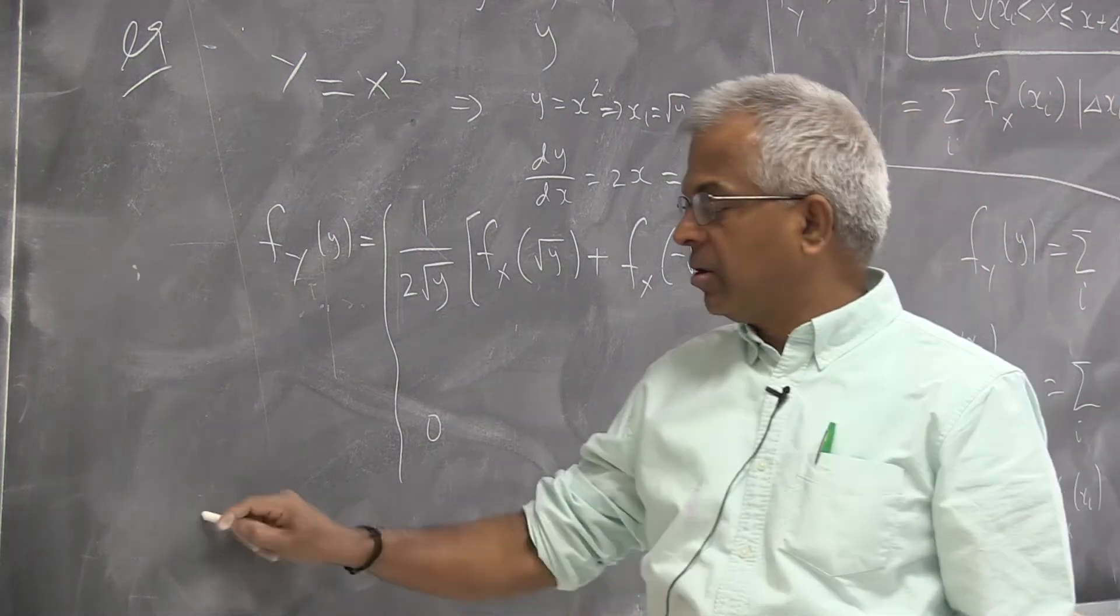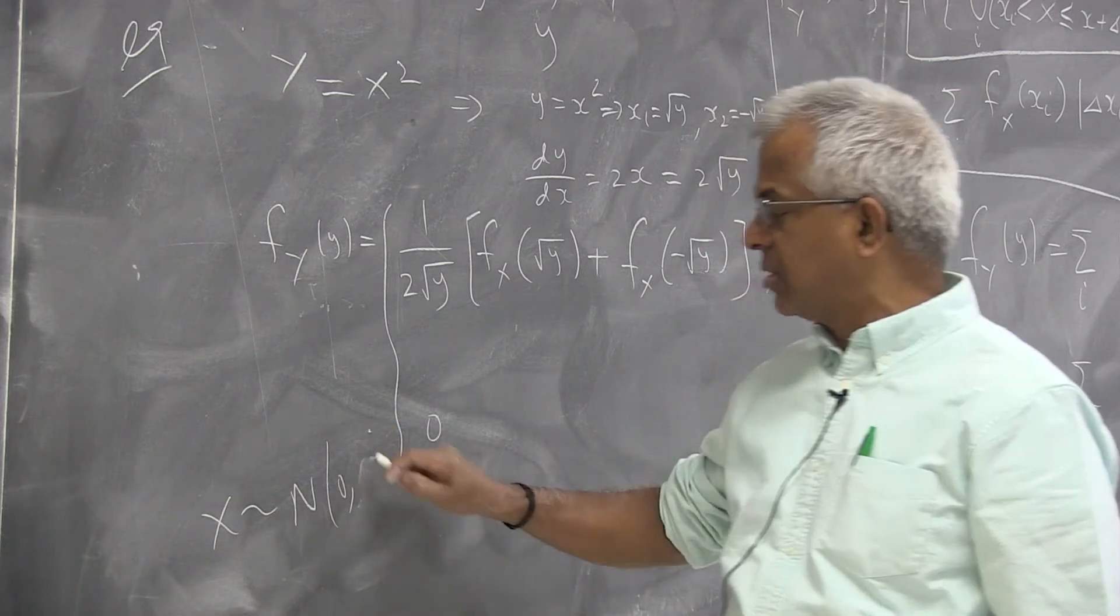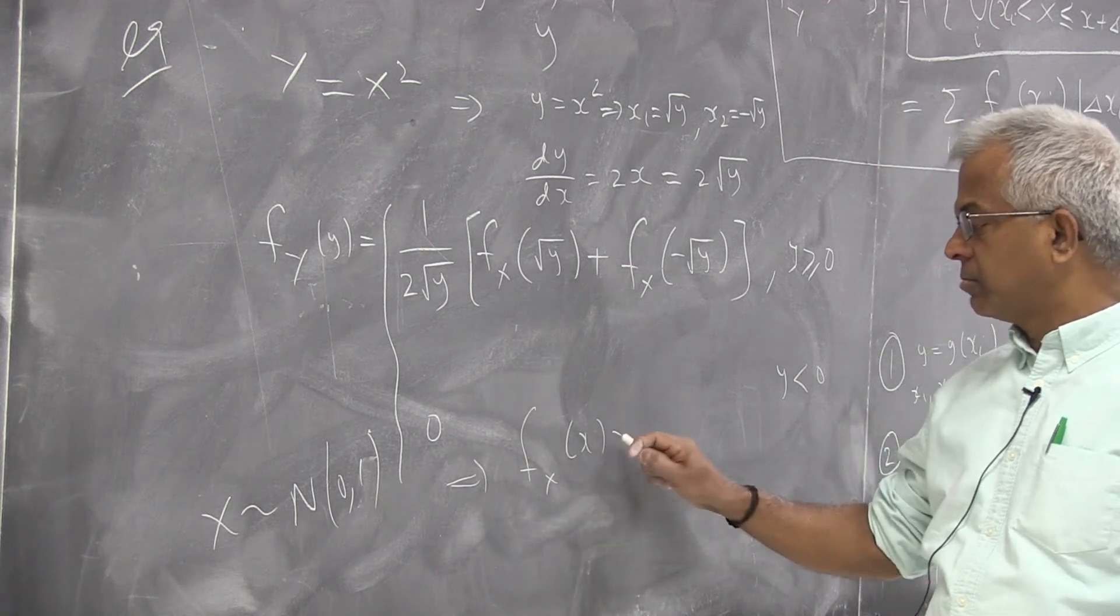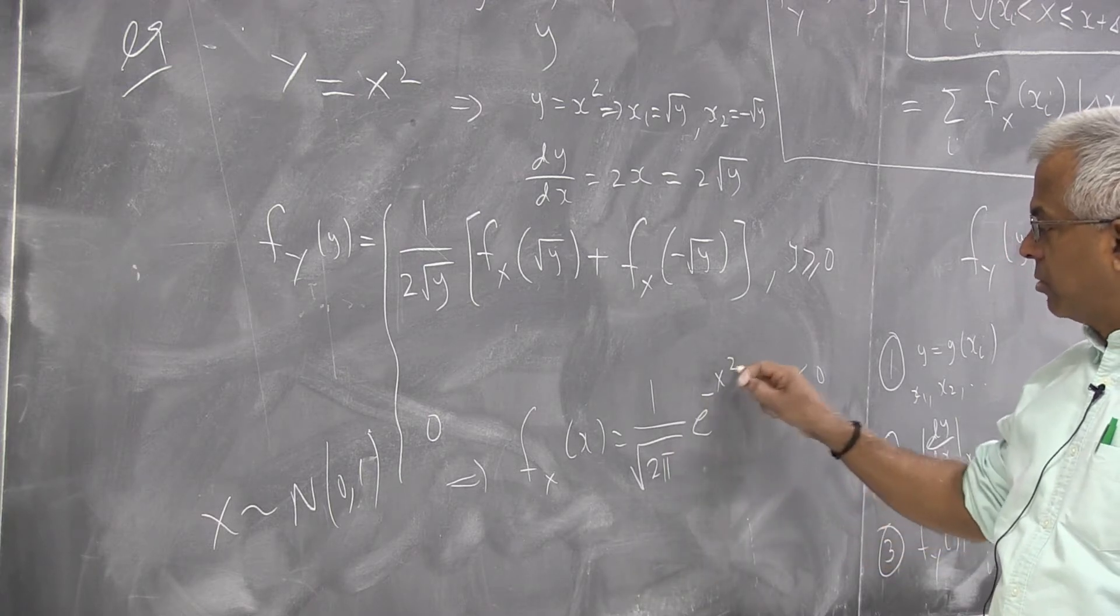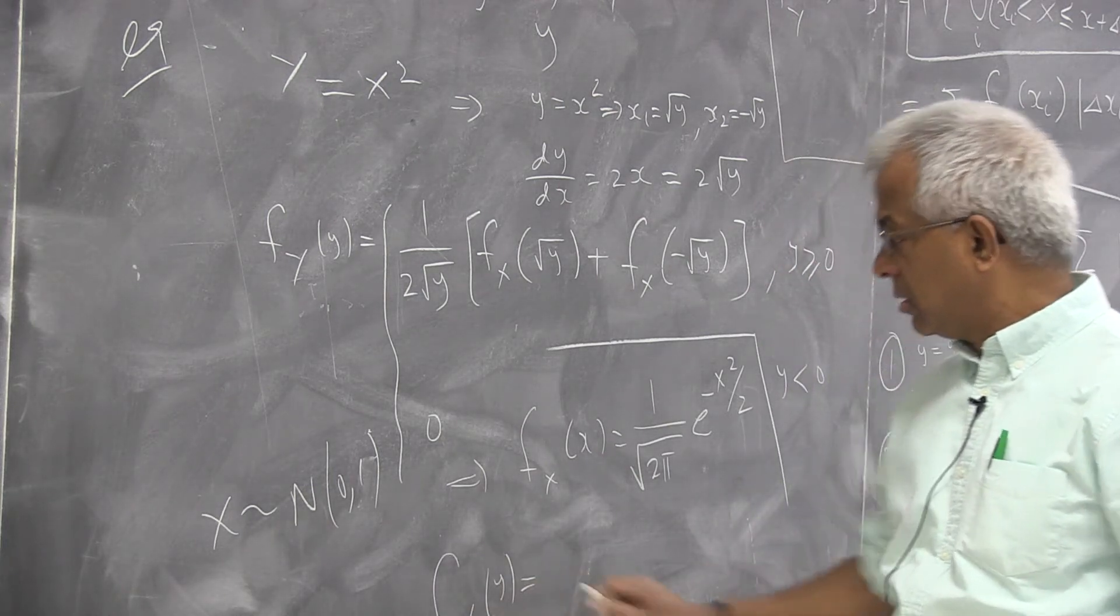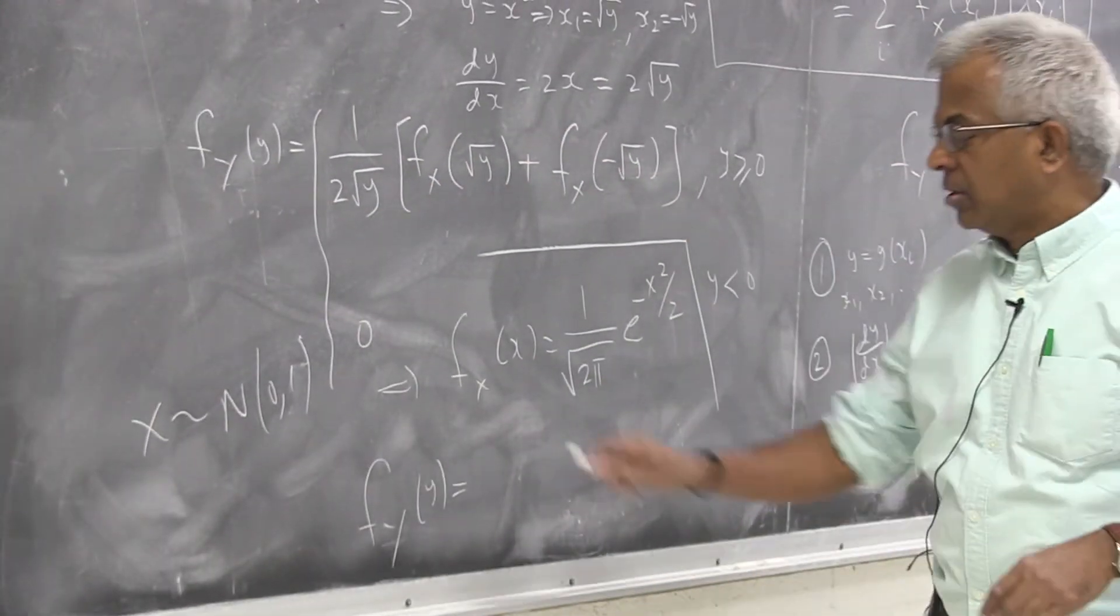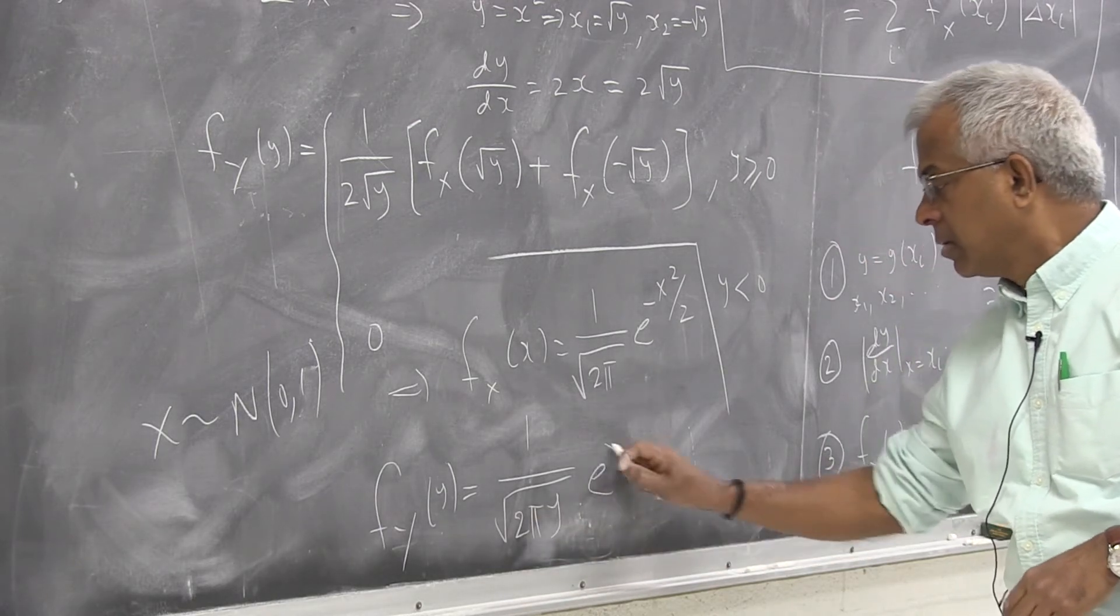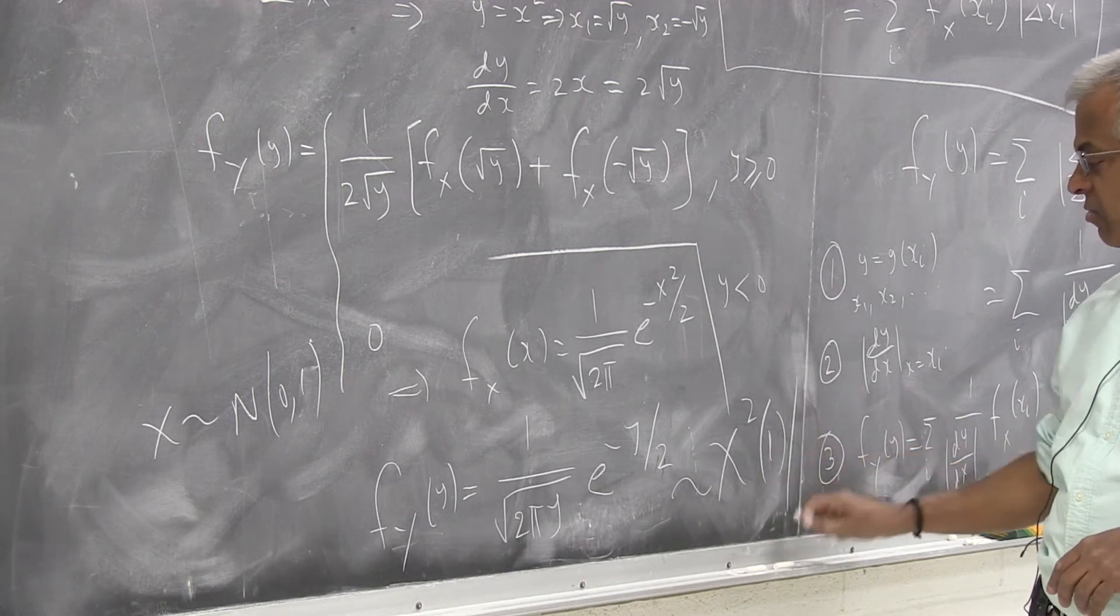So in particular, if x is normal random variable with parameters, let's say, 0 and 1, and then f_x(x) is, of course, 1 over square root of 2 pi e raised to minus x squared by 2. And f_y(y) is, so these two terms are the same, so two cancels. So if you substitute, we would get this to be 2 pi y e raised to minus y over 2. And this is chi squared with one degree of freedom.